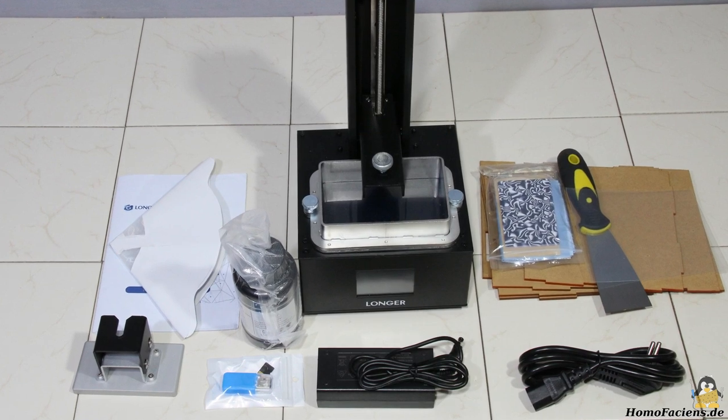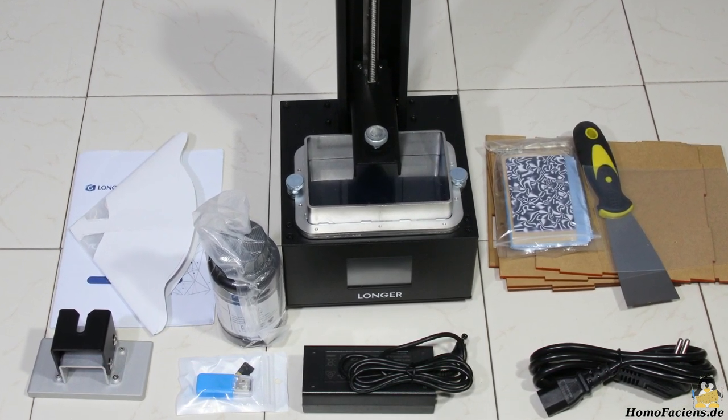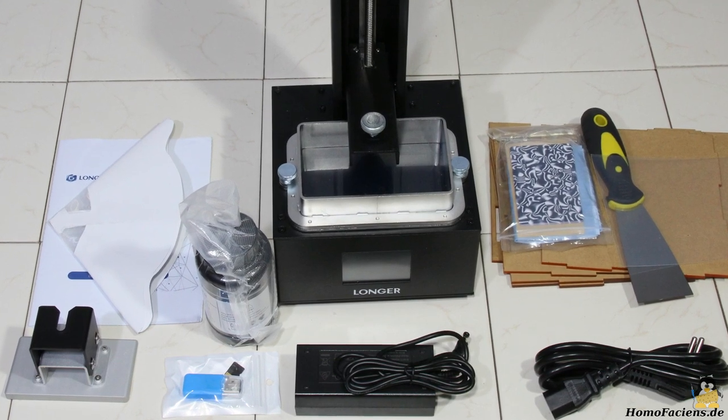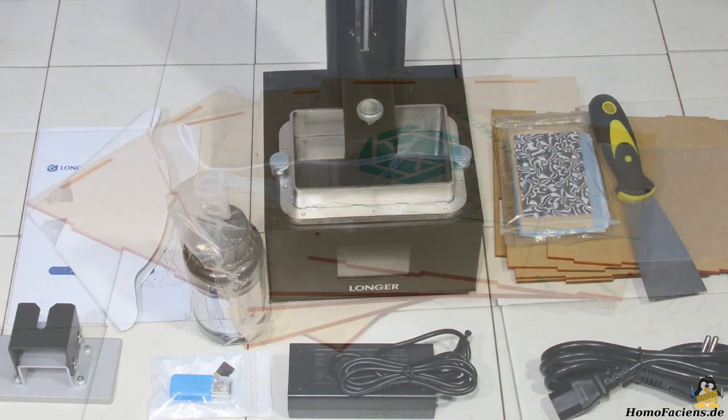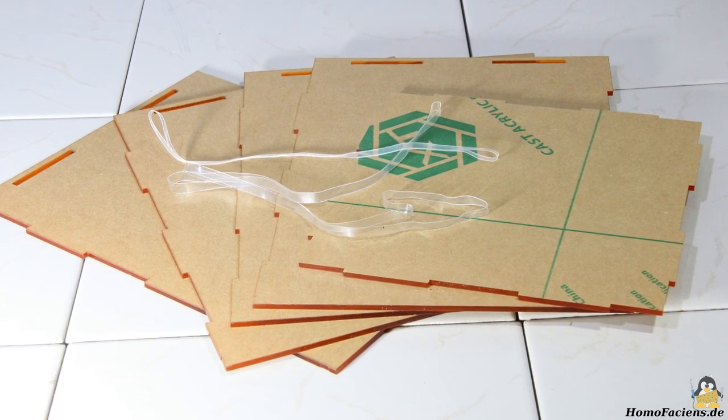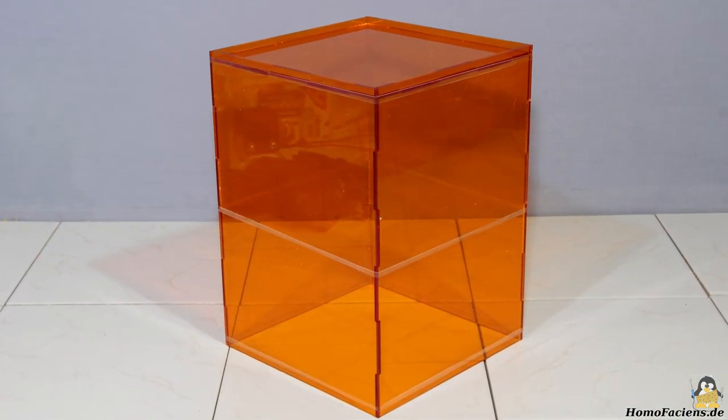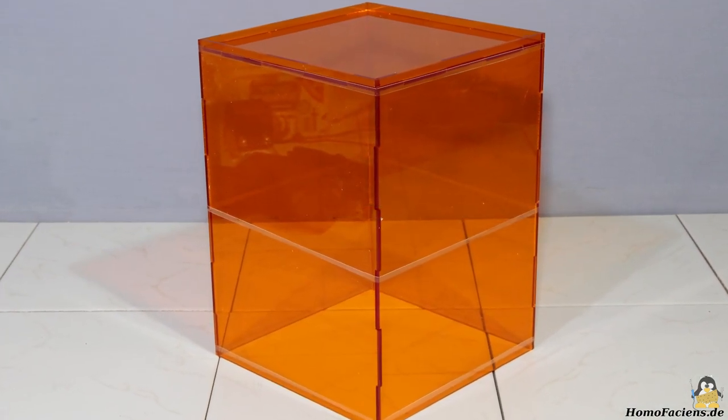Let's take a closer look at the device. The Orange 10 ships almost completely assembled with all components needed for first prints. Only the orange cover has to be assembled out of 5 parts.